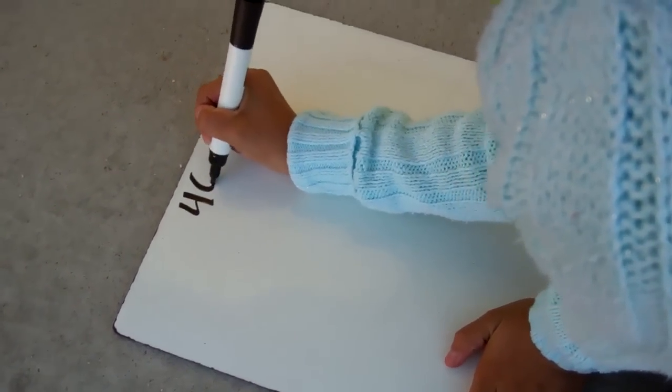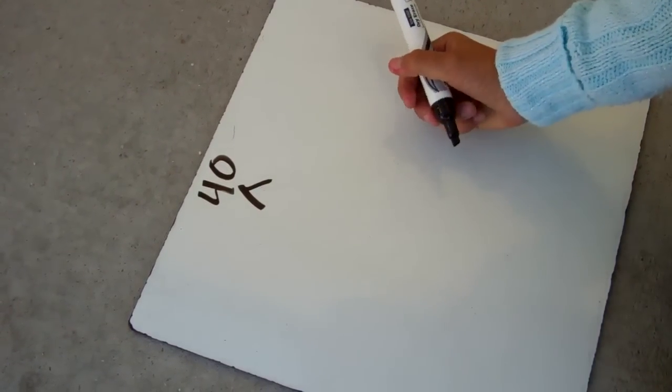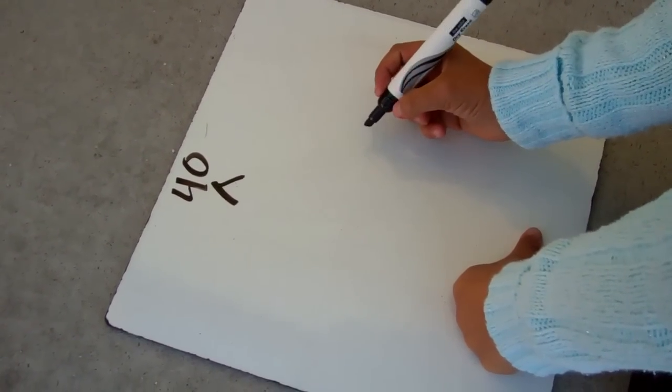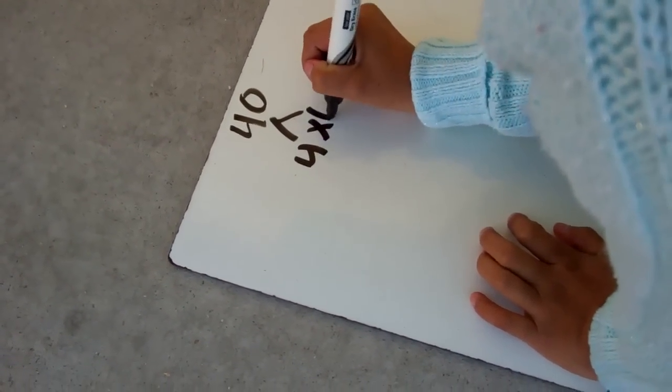First, our number is going to be 40. Then you have to put a branch, and then you have to do a multiplication problem that equals 40. For example, 4 times 10.